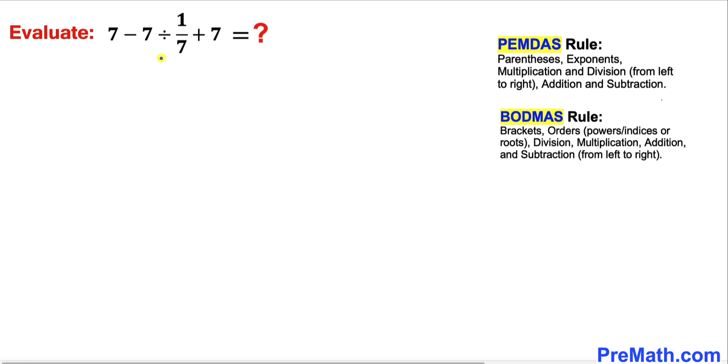Since we are dealing with a bunch of mathematical operations, we are going to use the PEMDAS rule, or sometimes we call it BODMAS. According to this rule, we always go from left to right.